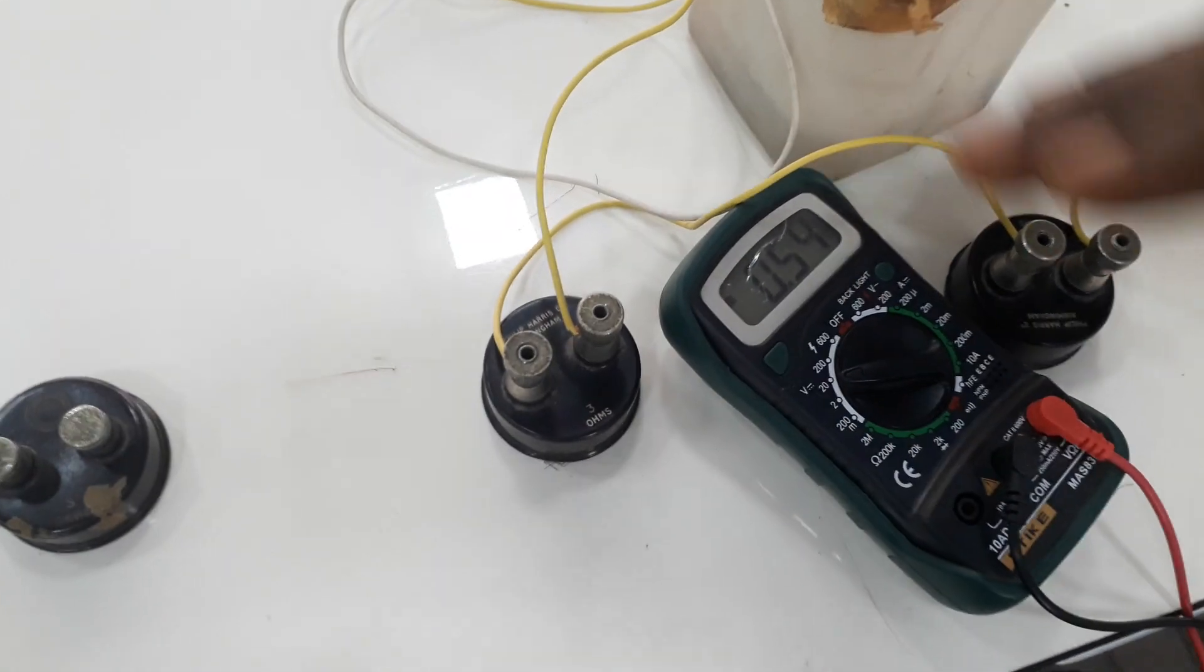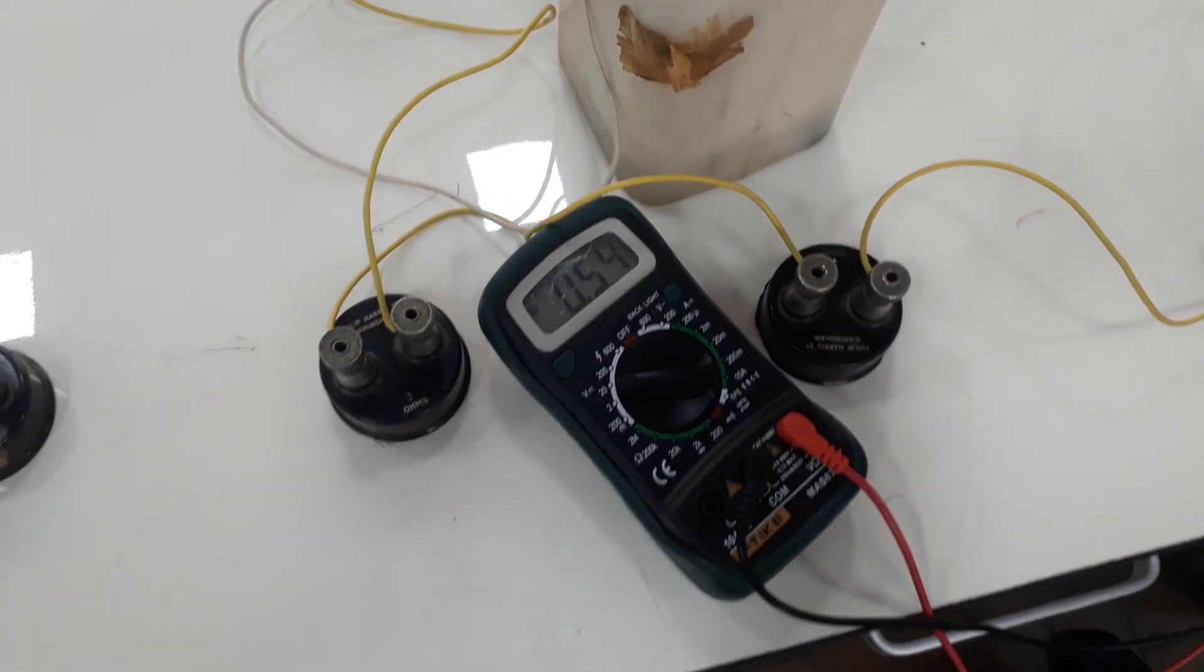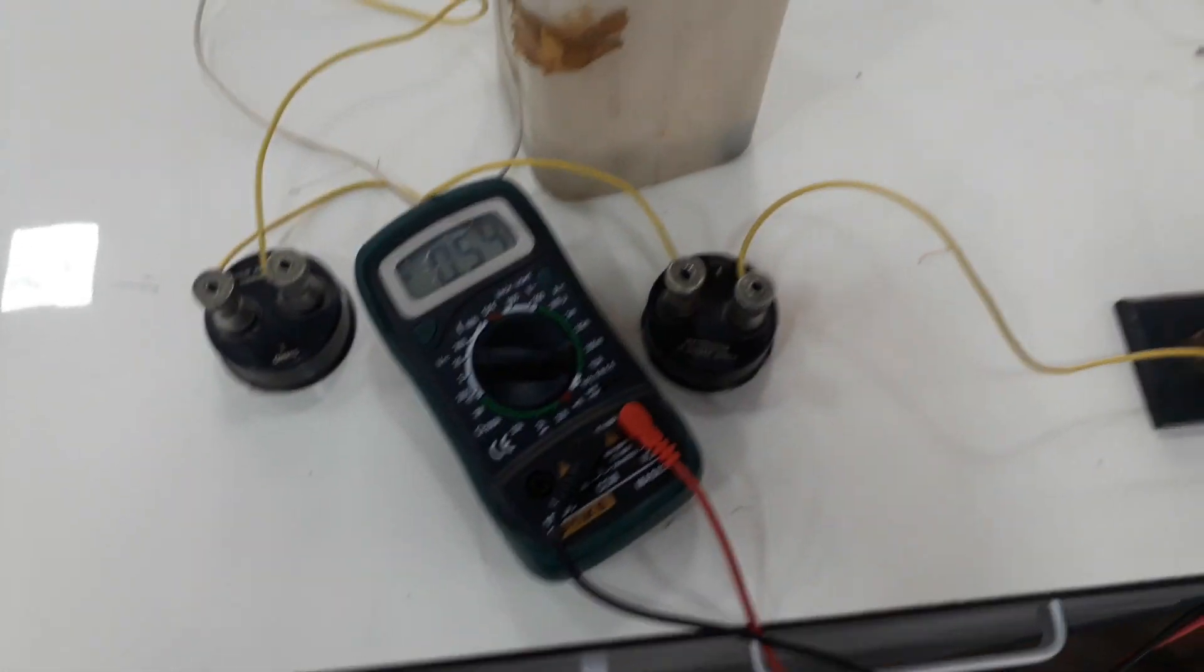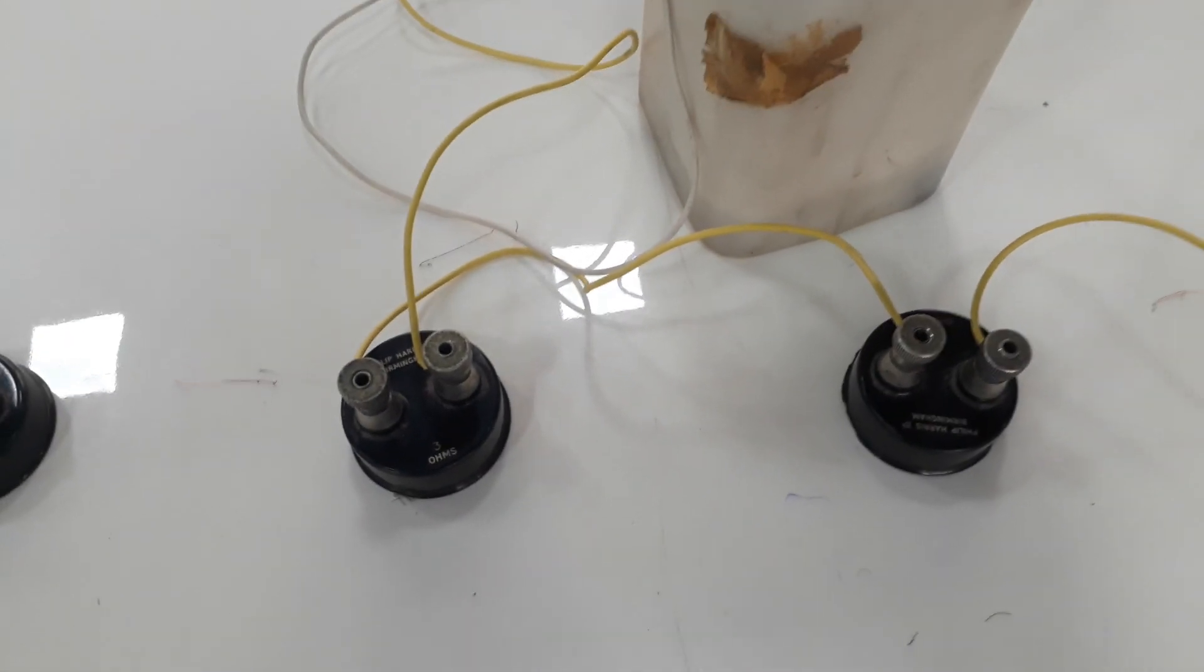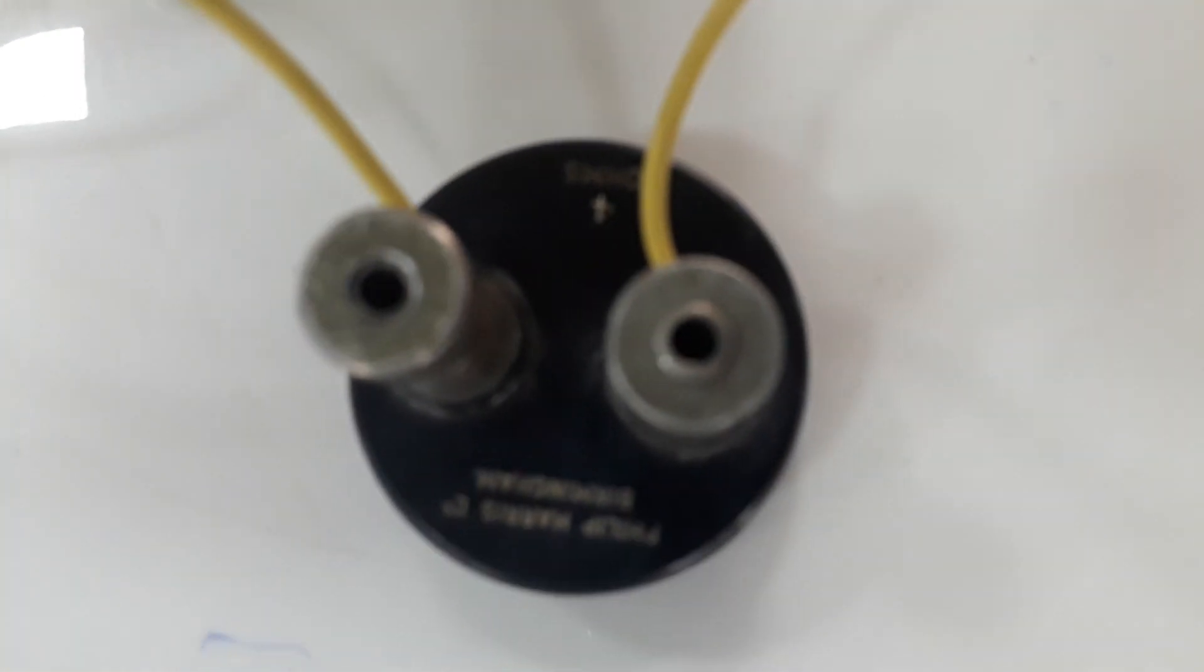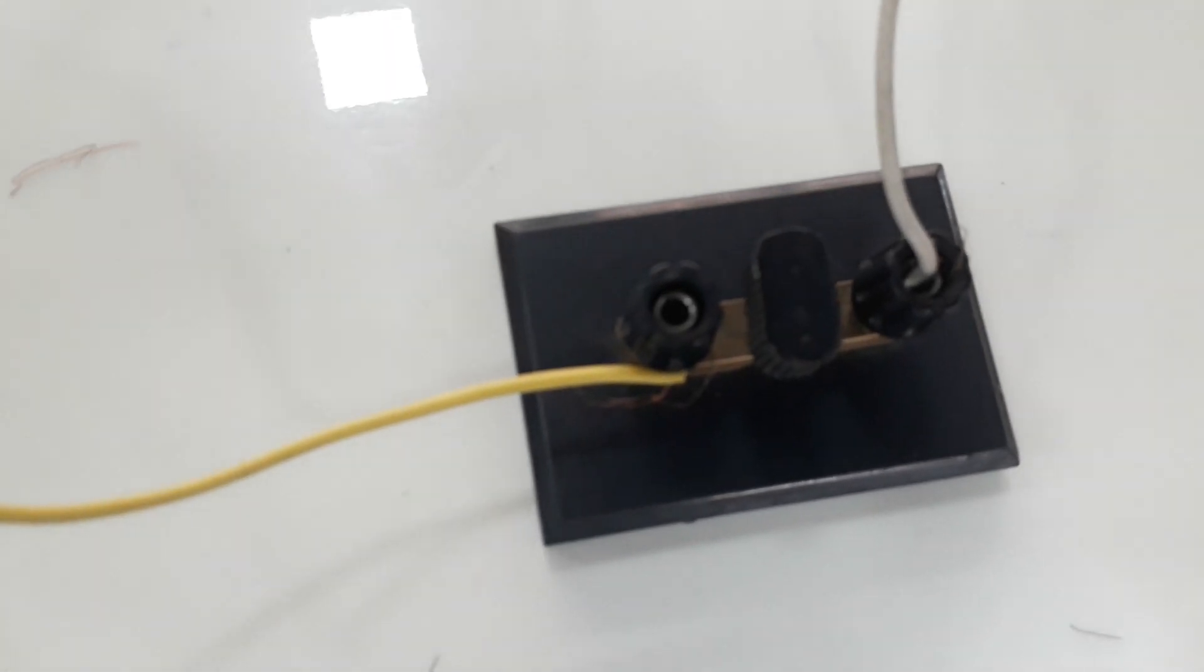Then from my Leclanche cell, I have connected to my resistors in series. Here I have 3 ohms resistor and 4 ohms resistor. That means I have 7 ohms connected in series. Then from my resistors, it is connected to my K2, my second key.